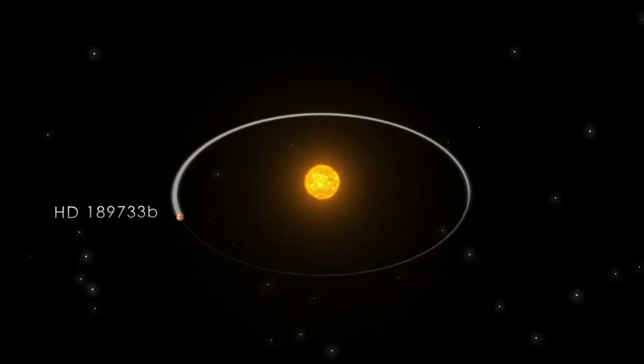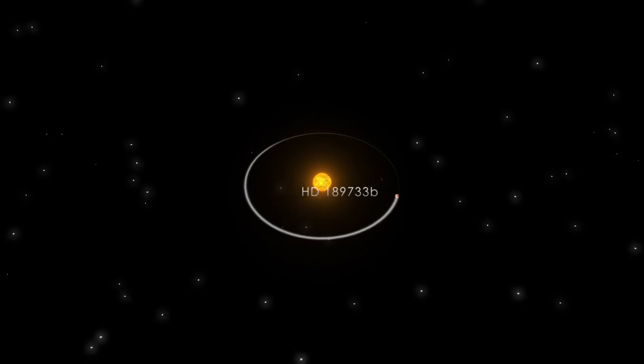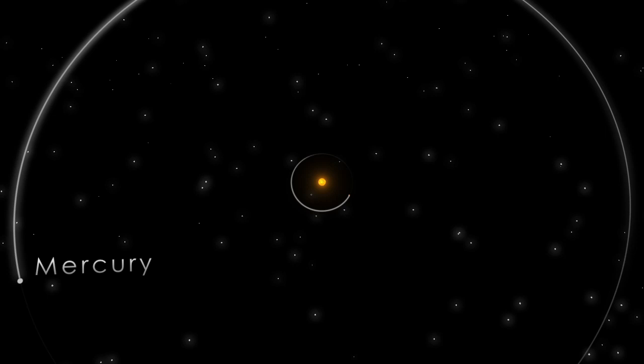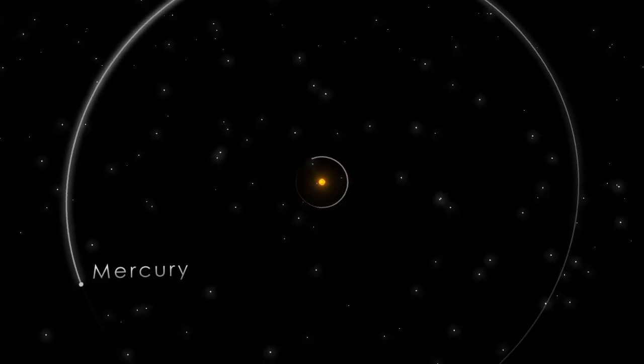Incredibly, the planet orbits just 3 million miles from the star, 12 times closer than Mercury orbits our Sun. It's so close that the planet whips around its star in a little over two days.